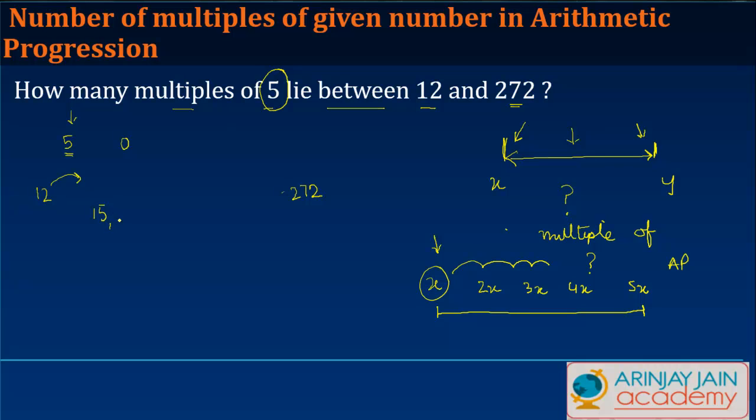Then the next multiple would be 20, 25, and so on. But I don't want to project it up to this number. I need to find out which number is closest to 272 which is also divisible by 5.